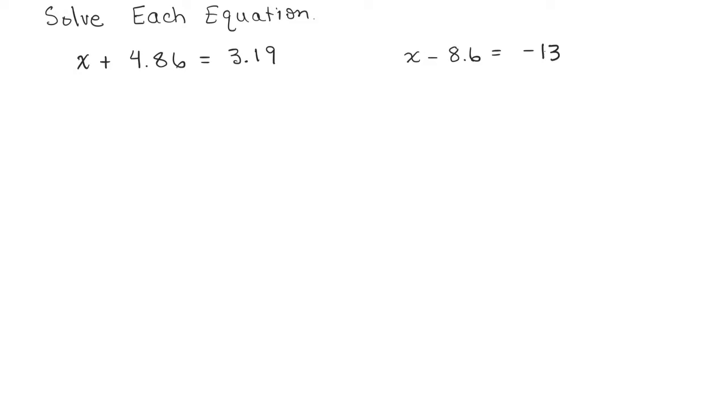So we need to isolate X, so we want to subtract 4.86 from this side so we'll only have X on the left-hand side, which means you'll also have to do the same thing on the right-hand side of the equation.